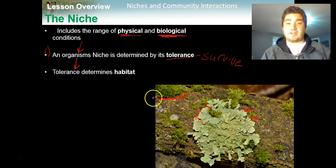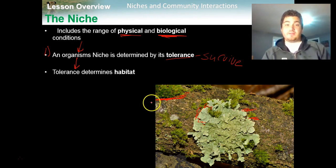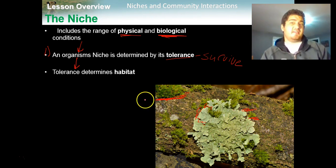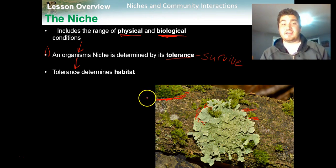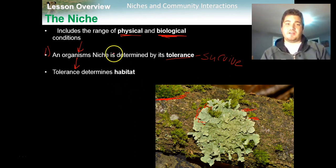Some things moss needs to survive: sunlight, nutrients from soil or a tree, and water. A squirrel, on the other hand, needs food, water, oxygen, and other squirrels to find a mate. So for each individual organism in an ecosystem, the niche can be very different.